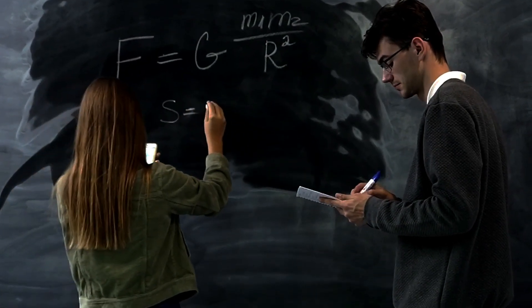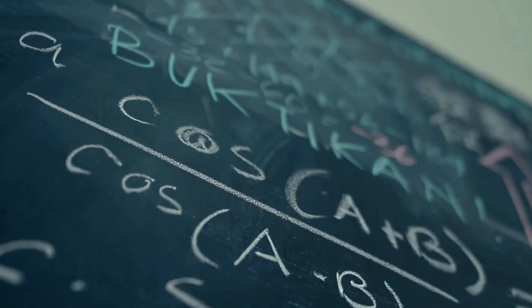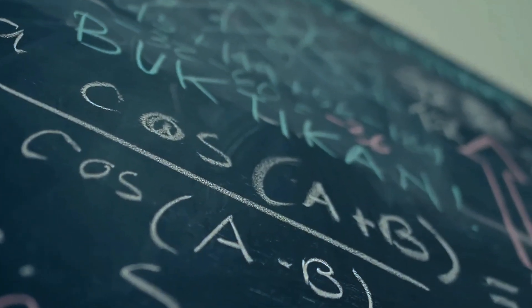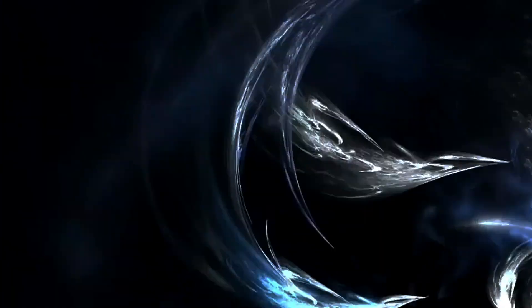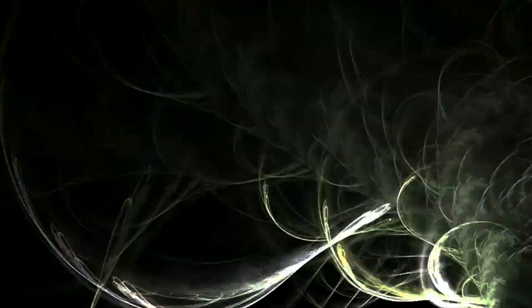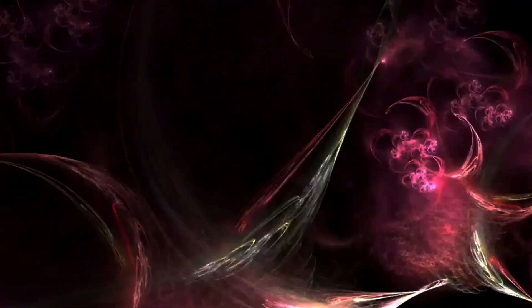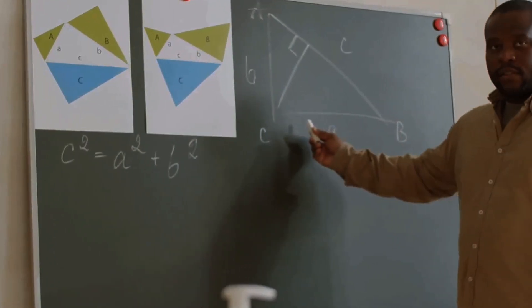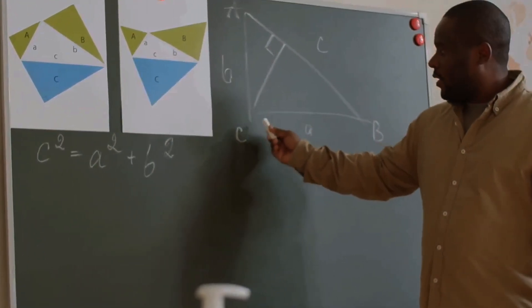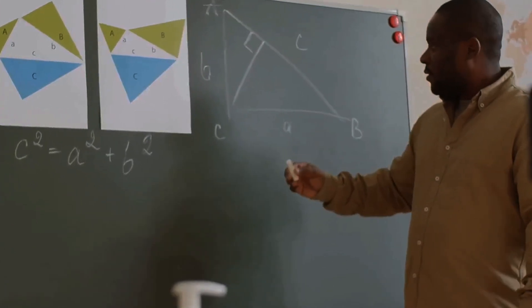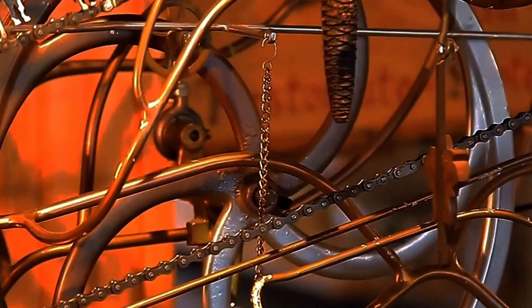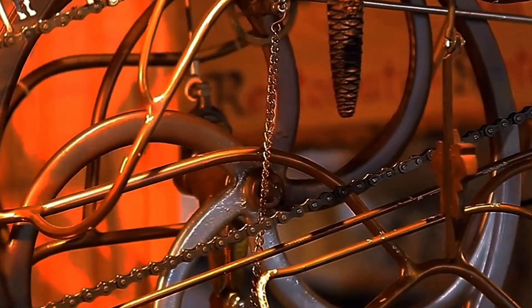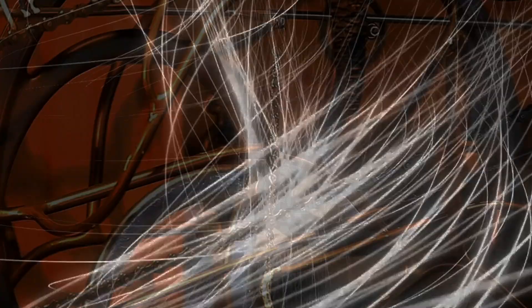The Hodge conjecture is another one in the 7 Millennium Prize problems in mathematics. It is a major unsolved problem in the field of algebraic geometry. The conjecture concerns the relationship between the algebraic cycles on a non-singular projective algebraic variety and the cohomology classes of the variety. In simpler terms, it deals with the ways in which certain geometric shapes can be described using algebraic equations. Despite significant progress in understanding the conjecture, a complete proof remains elusive.